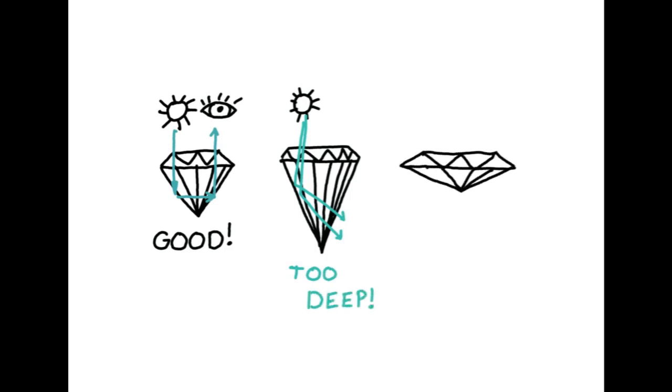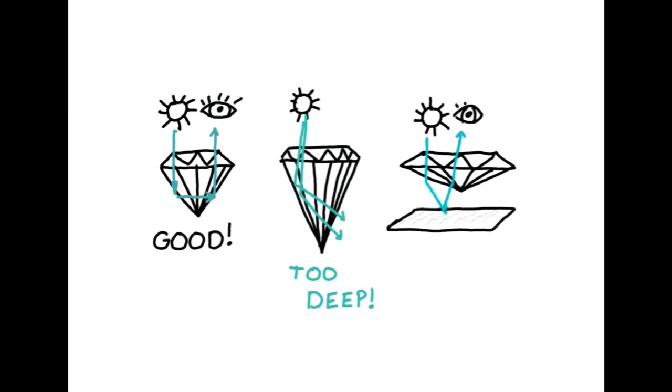With a shallow cut stone, the light can pass directly through the stone, onto the surface below, and back to the eye.